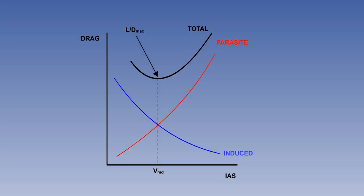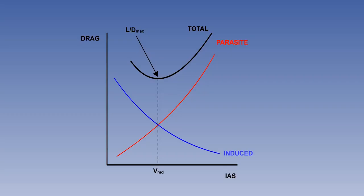Since flying at VMD incurs the least total drag for flight with lift equaling weight, the aircraft will also be at the angle of attack for the maximum lift-drag ratio, LD max, which is around 4 degrees. It is important to remember that LD max is obtained at a specific angle of attack, and also that the maximum lift-drag ratio is a measure of aerodynamic efficiency.